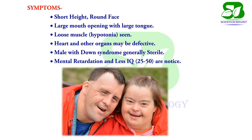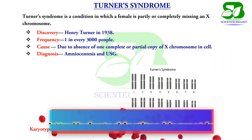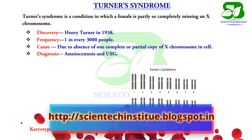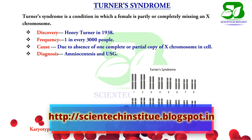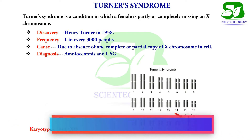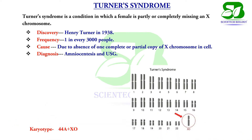The karyotype of Turner syndrome is XO, meaning the female is partially or completely missing an X chromosome. Henry Turner in 1938 first reported this syndrome. The frequency of this disorder is one in every 3,000 children.